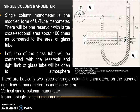Single column manometer is one of the modified forms of U-tube manometer. There is one reservoir with large cross-sectional area, about 100 times as compared to the area of the glass tube. The left limb of the glass tube is connected with the reservoir and the right limb is open to atmosphere. There are two types: vertical single column manometer and inclined single column manometer.